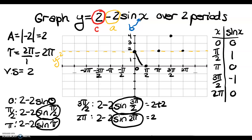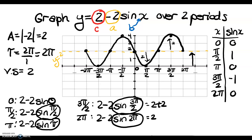When I graph this, the sine function is upside down because the amplitude value a is negative, which flips the graph over the x-axis. From the resting position, it has an amplitude of 2, but the resting position is now at y equals 2. I mark the points for the second period and draw the curve — the graph has been shifted up by 2.